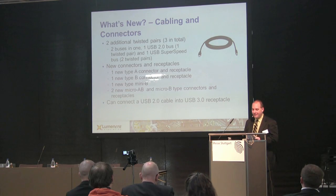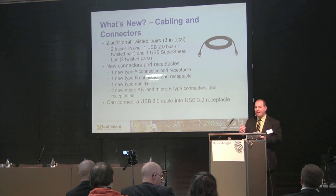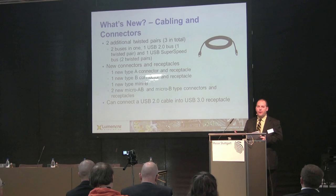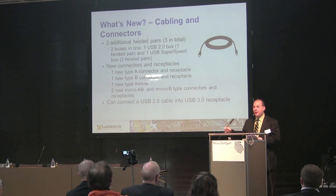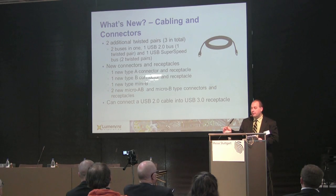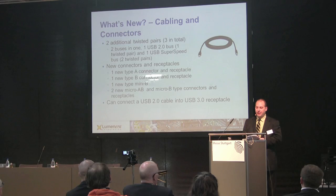As an example, a cell phone could have an AB port where when connected to a computer it could act as a USB device, and when connected to a printer it could act as a host and control that printer. It should also be noted that USB 2.0 cables can be plugged into any USB 3.0 port and the device will work directly; however, that device will only run at USB 2.0 speeds.